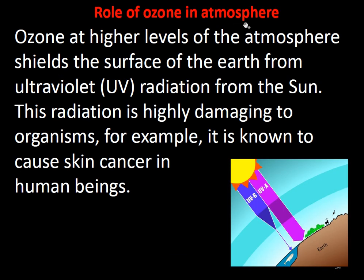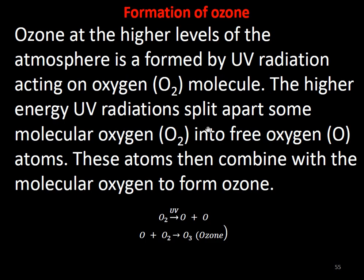What is the role of ozone in the atmosphere? Ozone absorbs harmful ultraviolet radiation coming from the sun. Ozone at higher levels of the atmosphere shields and protects the earth's surface from UV radiation from the sun. This radiation is highly damaging to organisms — it causes skin cancer in human beings. How is ozone formed? Oxygen in the air breaks down into O + O under UV radiation, and that O combines with O₂ to form O₃. So ozone at a higher level of atmosphere is formed by UV radiation acting on oxygen molecules, splitting them into free atoms which then combine with molecular oxygen to form ozone.